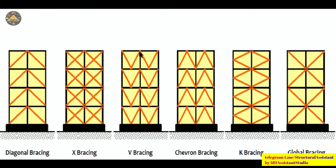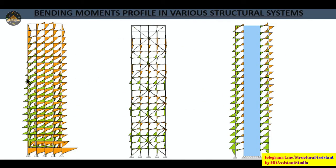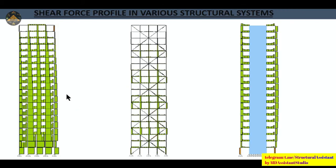All bracing types reduce the bending moment, shear force, and axial force demands in the beams and columns of the original frames. Types include diagonal bracing, x-bracing, v-bracing, chevron bracing, k-bracing, and global bracing, which is widely used in high-rise buildings. After providing global bracing, the bending moment diagram shows significantly reduced moments compared to the RCC frame alone, while structural walls give intermediate results.